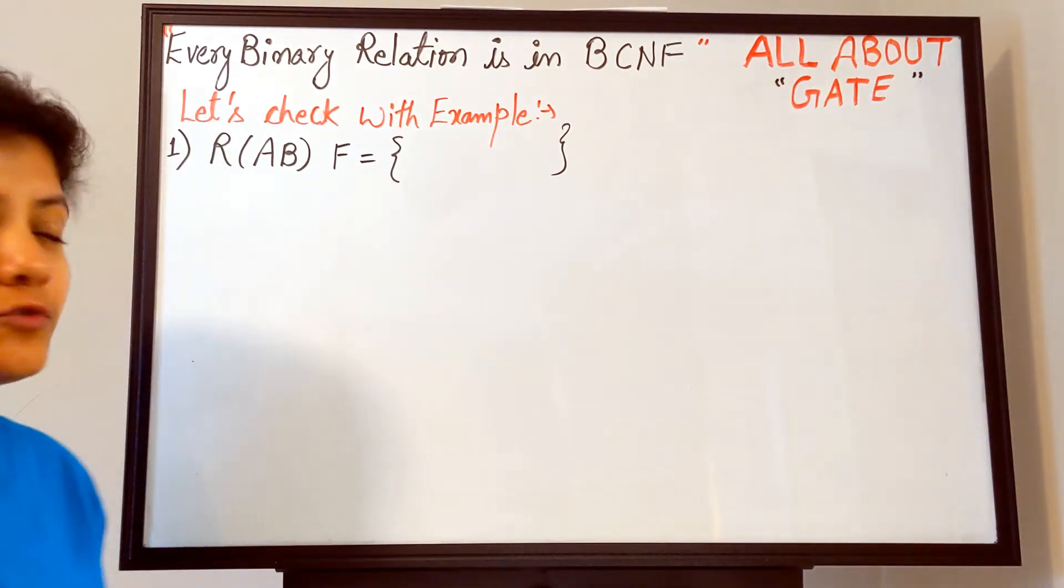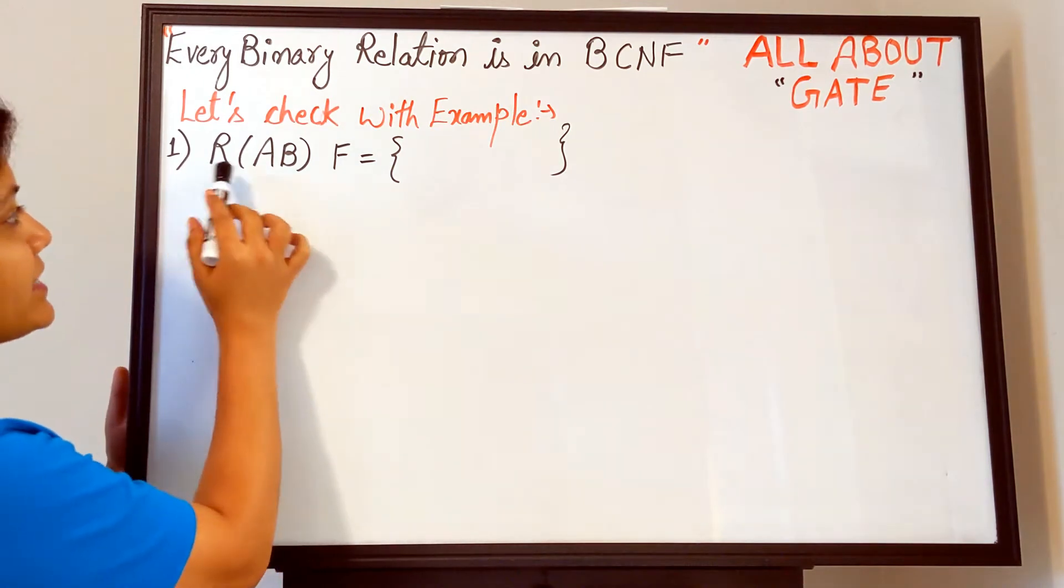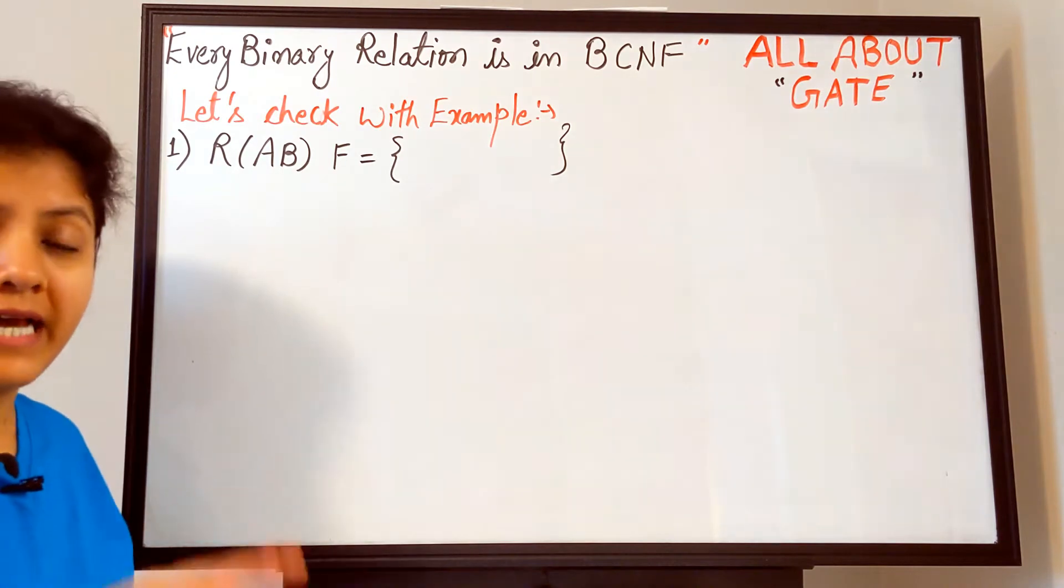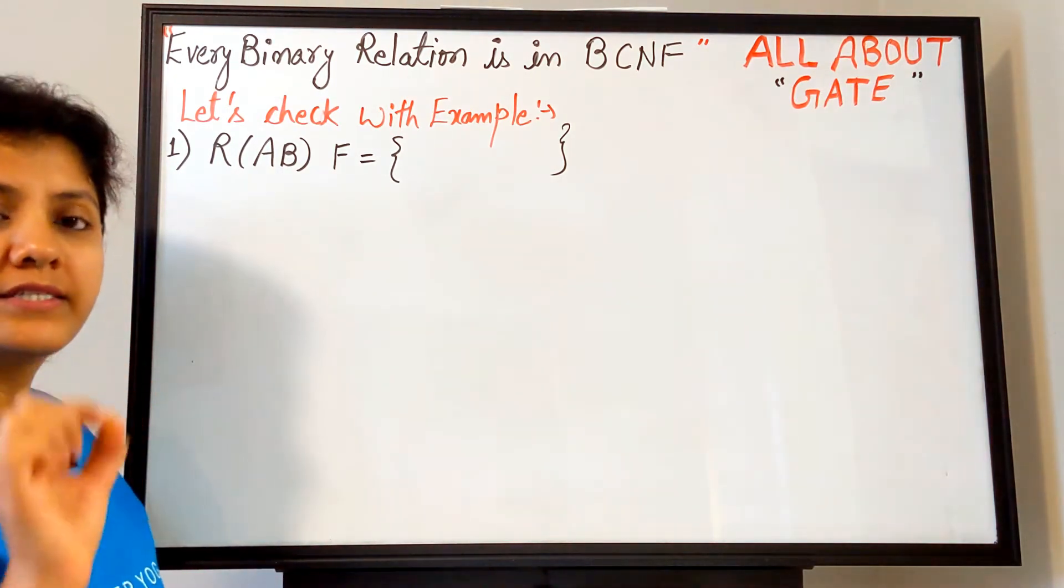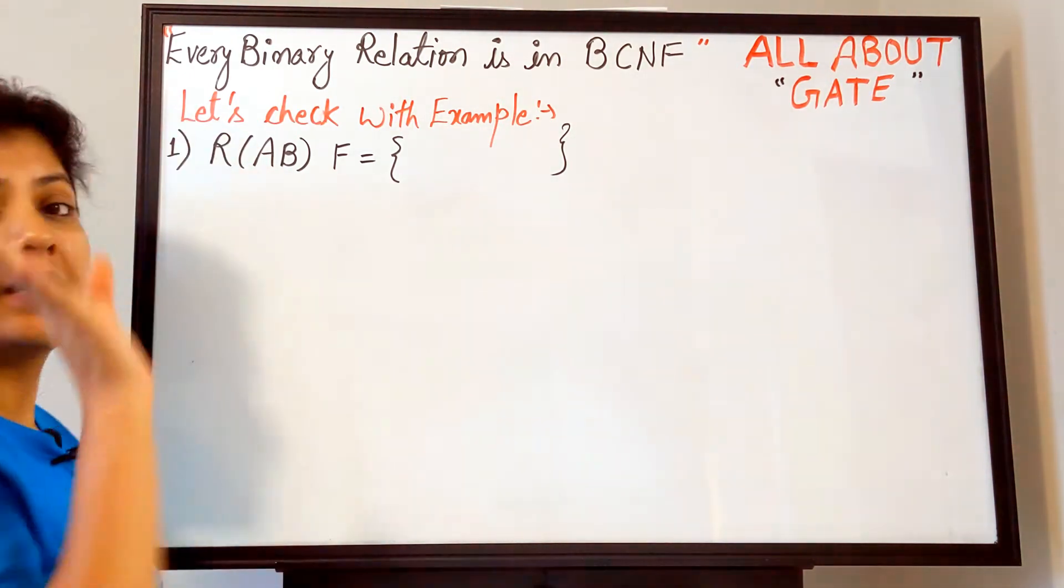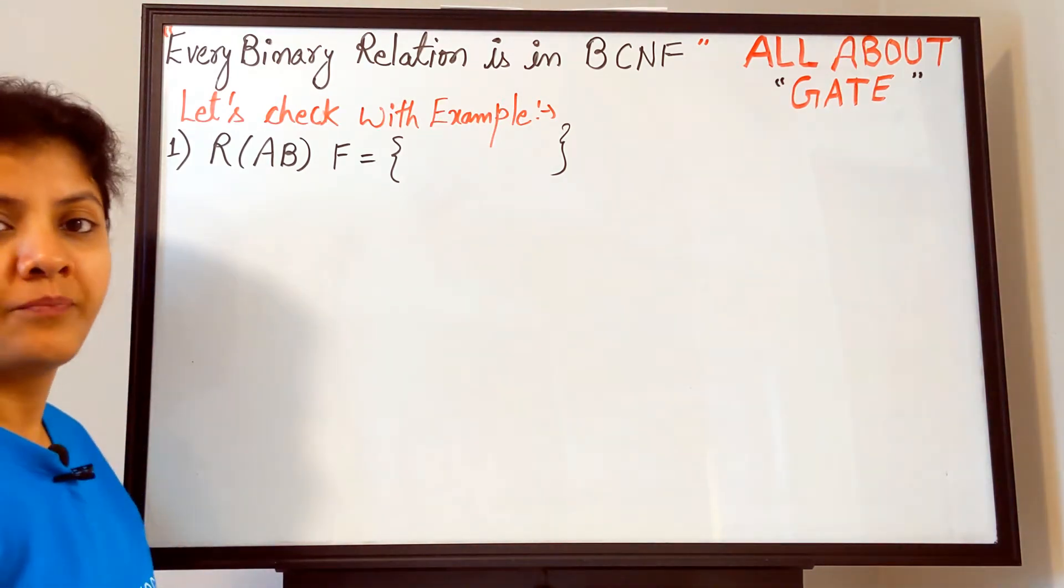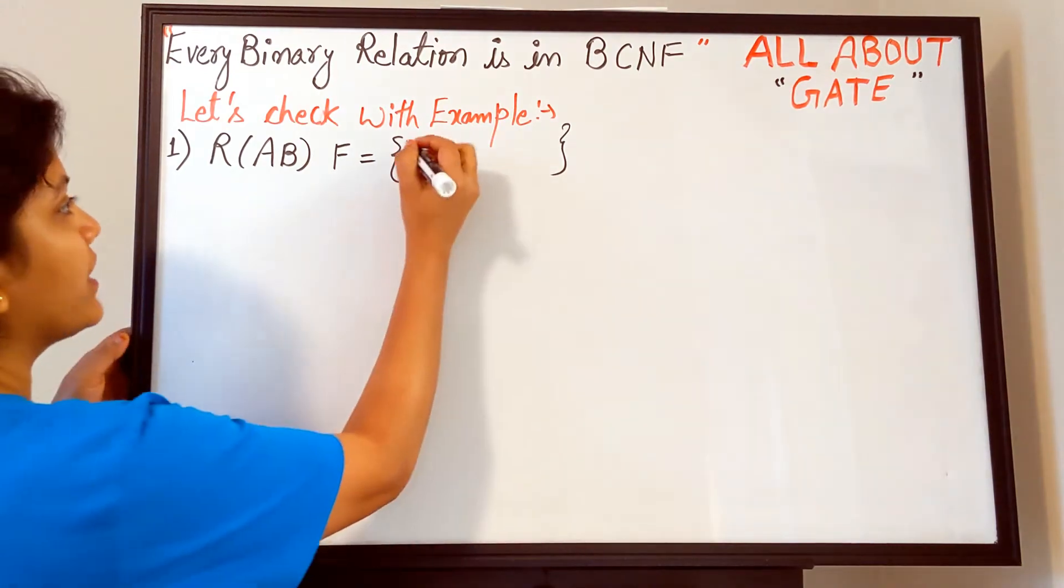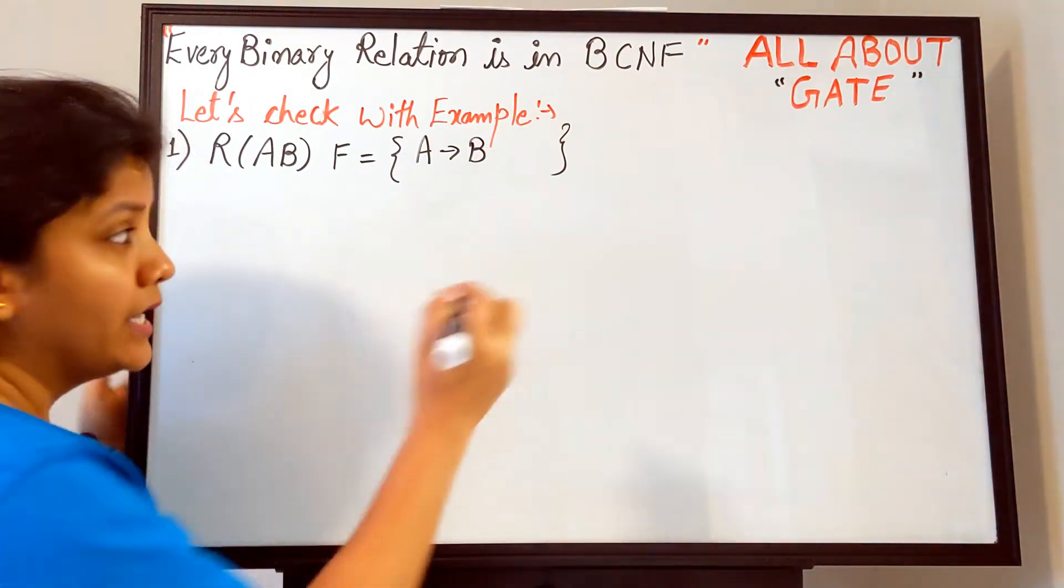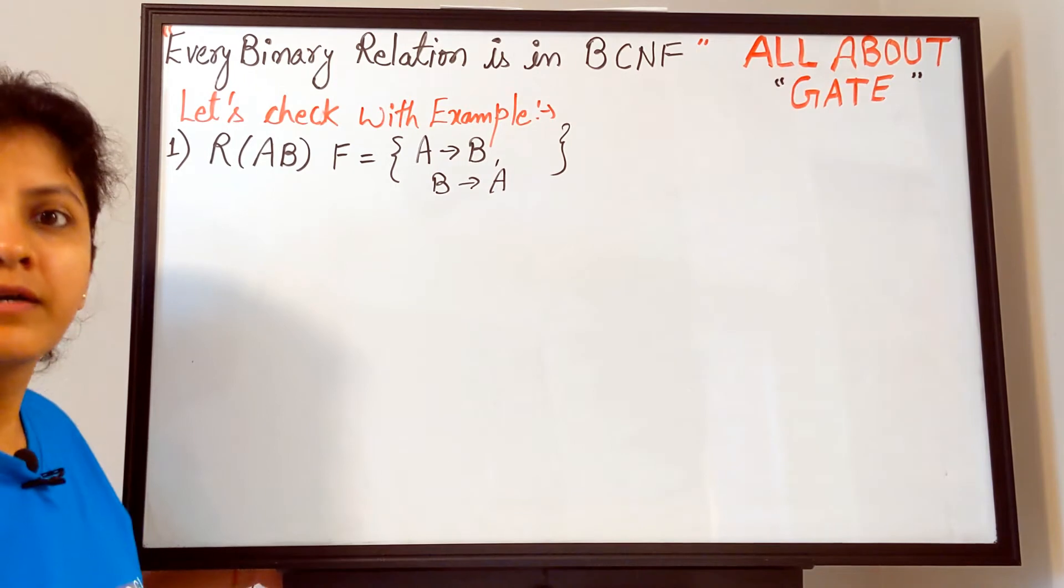A binary relation is a relation which contains two attributes—only two attributes. I have taken an example R with two attributes A and B. The functional dependencies set I have left empty. Now you just decide what are the non-trivial functional dependencies possible over this relation. I hope you all are writing that only two are possible: one is A can determine the value of B, and the other is B can determine the value of A.